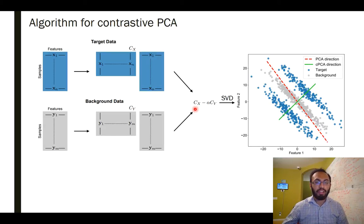Cx here is the covariance matrix of the target data. Alpha is a weight. Cy is the covariance matrix of the background. And this difference here is going to be a symmetric matrix. We go ahead and compute the SVD of that matrix, the singular value decomposition. And then the singular vectors give us the contrastive principal components on which we project the data.